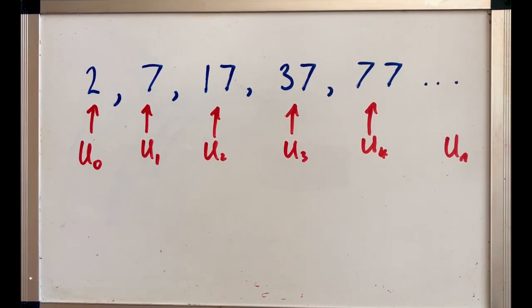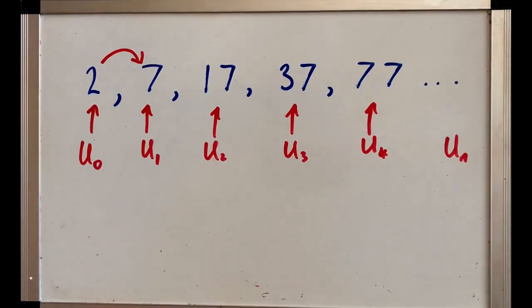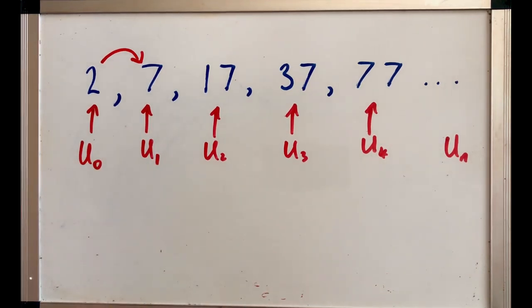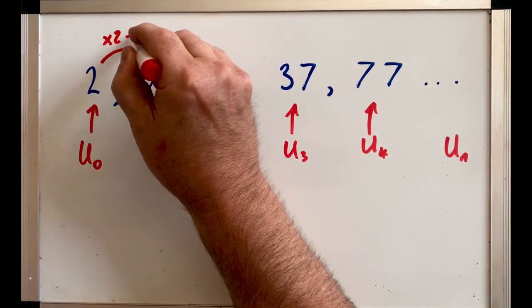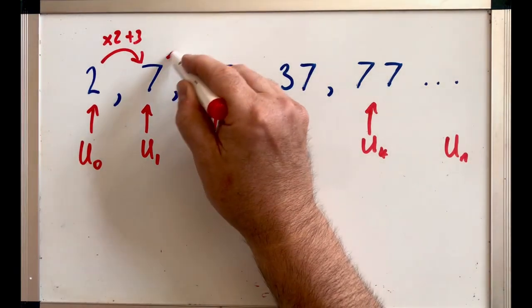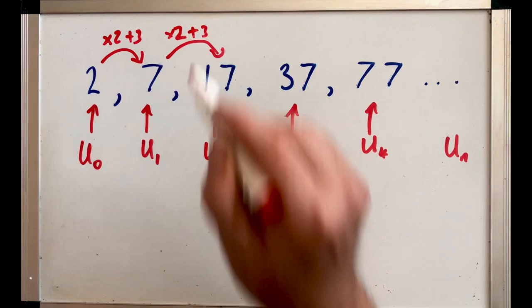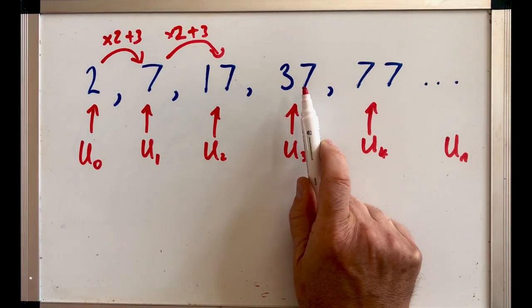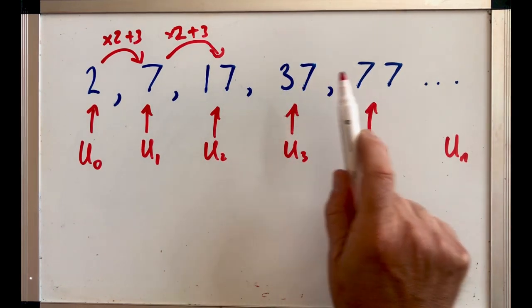Now we said linear. What do we mean by that? We mean the connection for a linear recurrence relation between one term and the next is multiplied by something and in this case, add something on. If you look at all these, these are all times 2 plus 3. And then if you look at that, 2 times 7 plus 3 will give me 17 and so on. 2 times 17 plus 3, 37. So, in this case, it's multiplied by 2 and add on 3.